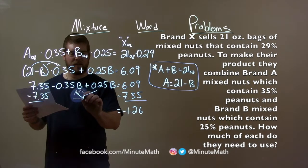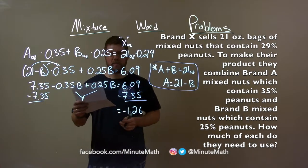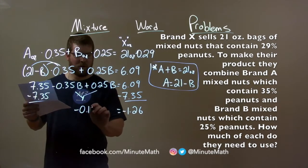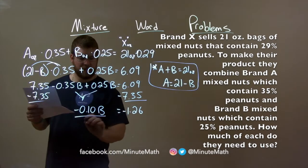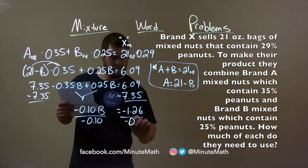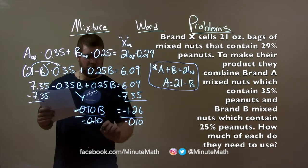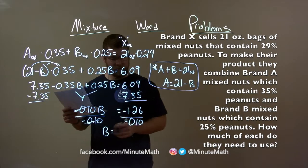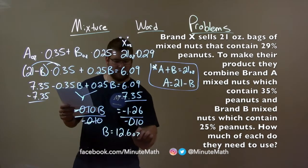We combine these two together here. It's kind of a weird combination, but negative 0.35 B plus 0.25 B is a negative 0.10 B. Divide that to both sides, a negative 0.10. The negatives cancel, making it a positive. And B equals negative 1.26 divided by negative 0.10 is a positive 12.6 ounces.